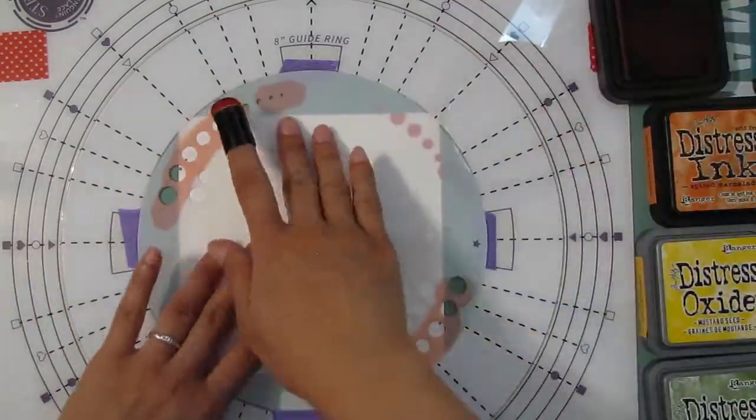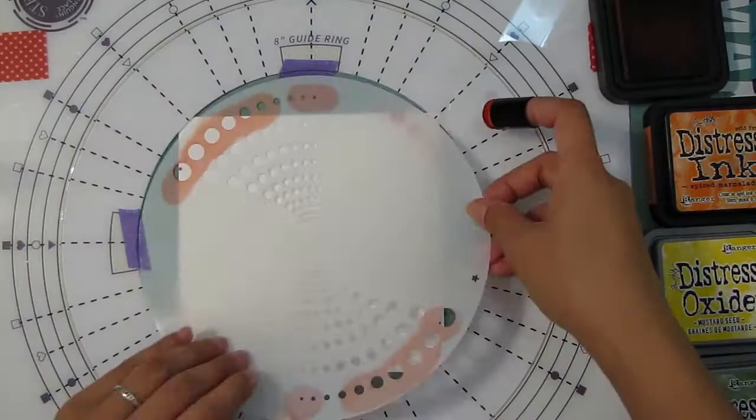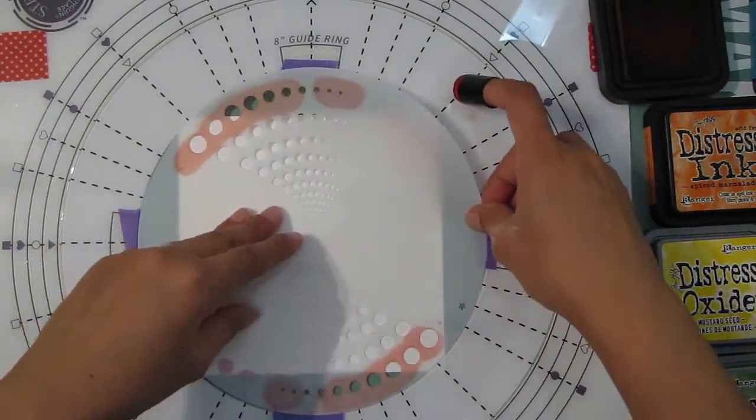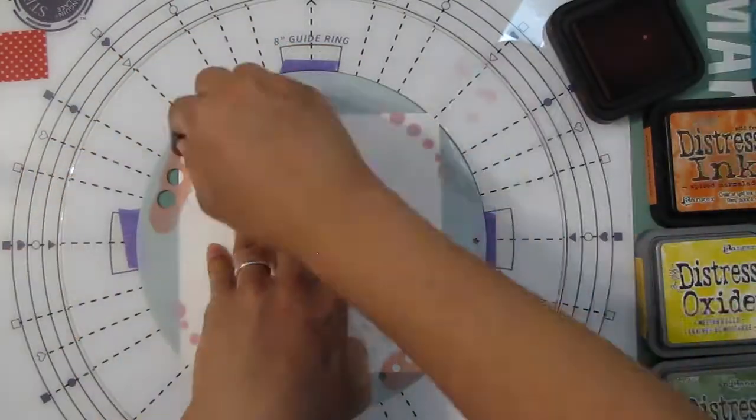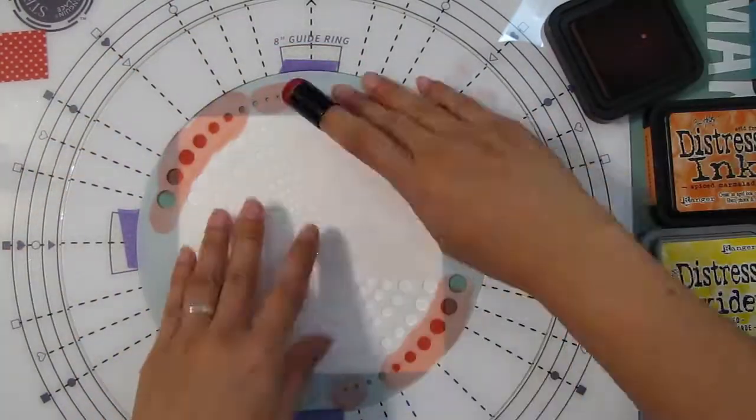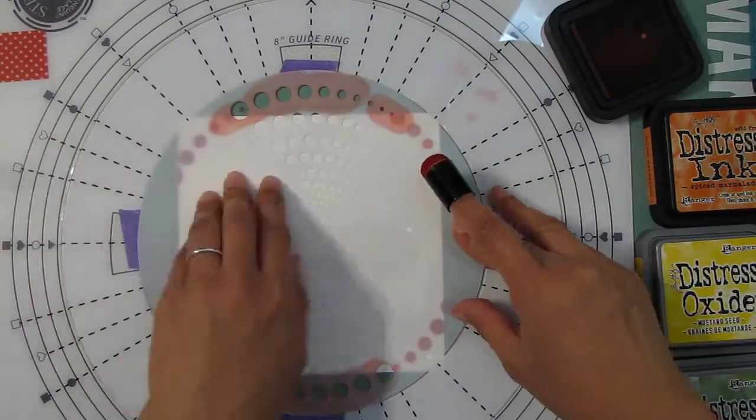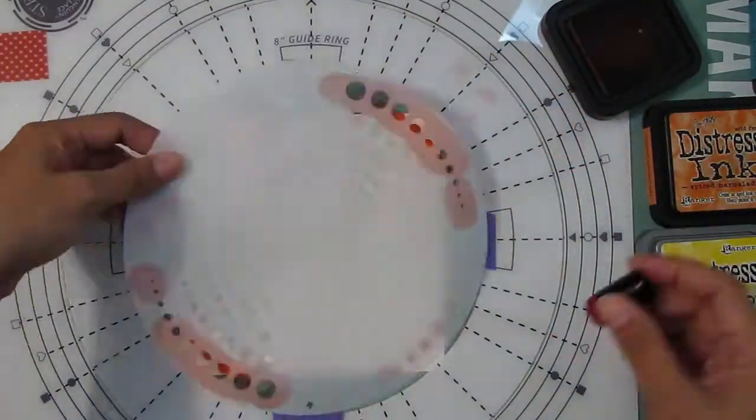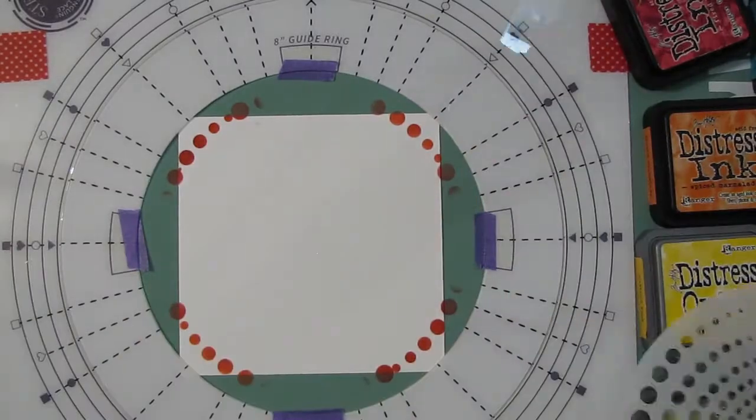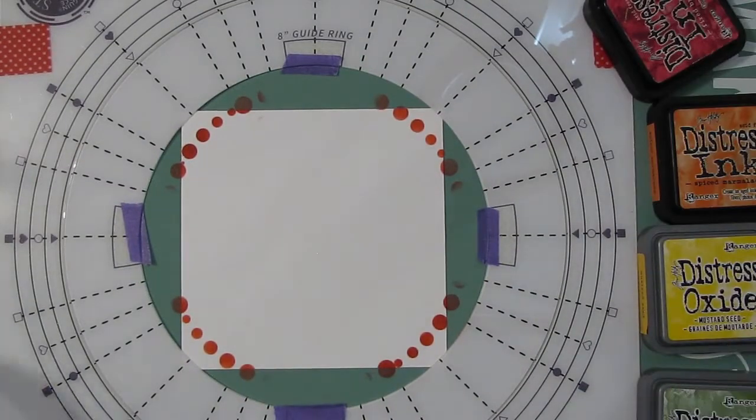I went ahead and started to use the Water Spout stencil. At first I was going to follow along the symbols on the outer ring, and then I just decided to wing it. I had an idea in my head to do some kind of rainbow circle ring, so that's what I went for.